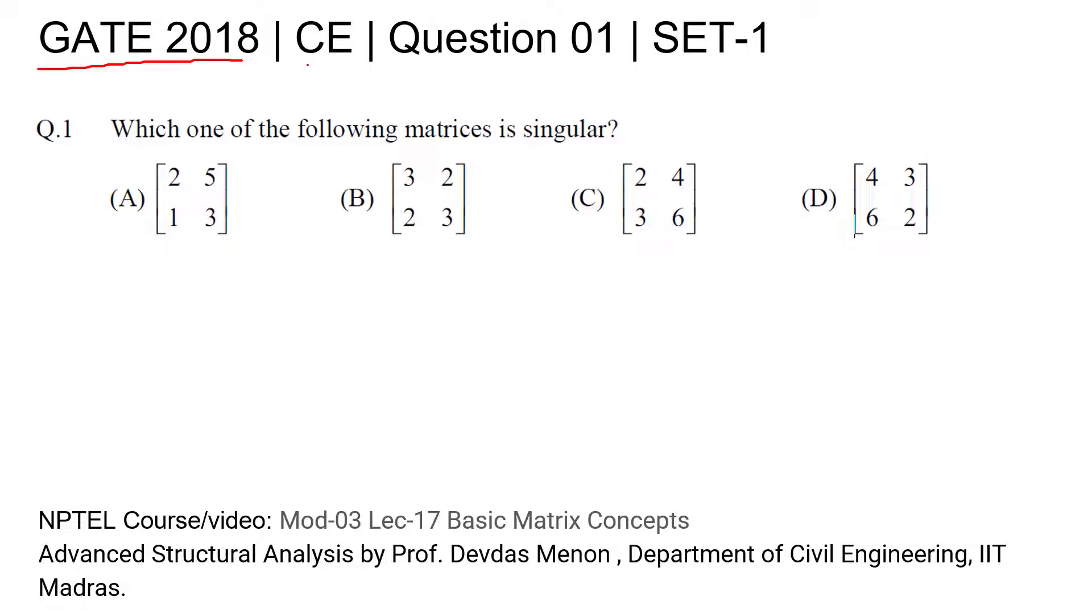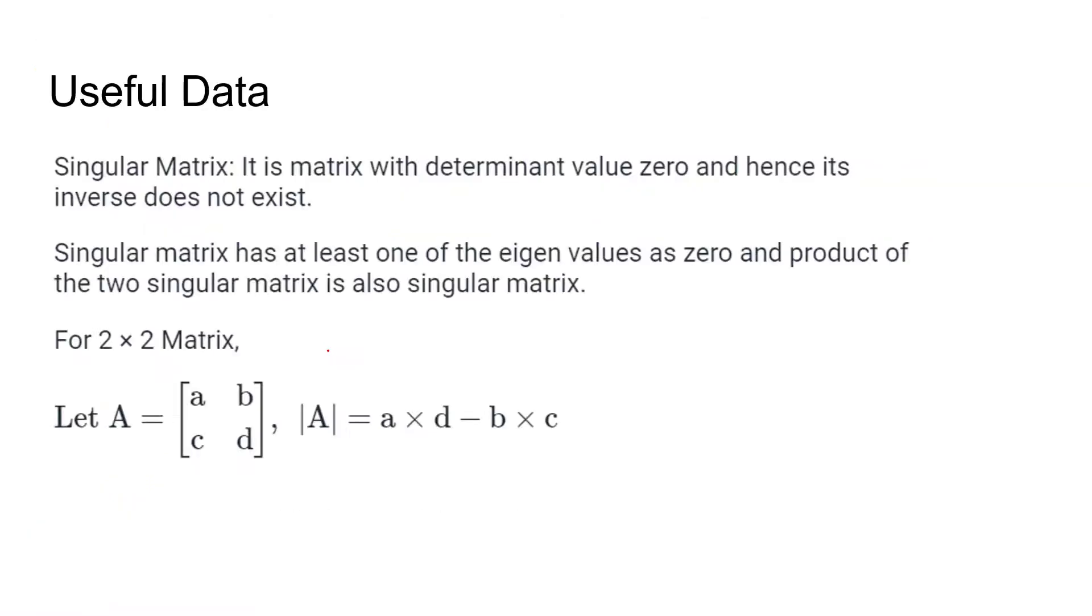GATE 2018 Civil Engineering question number one, Set 1: Which one of the following matrices is singular? For this question, you can refer to this NPTEL video lecture. This is a basic, very simple matrix question which can be solved very easily. Do you know what is meant by singular matrix? A singular matrix is a matrix with a determinant value of zero, and hence its inverse does not exist.